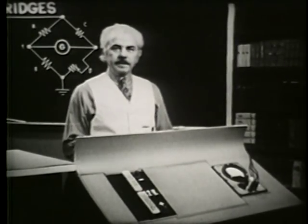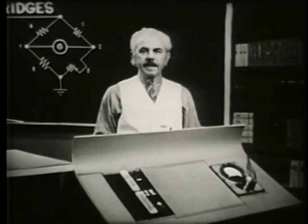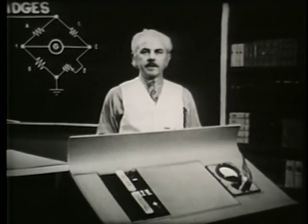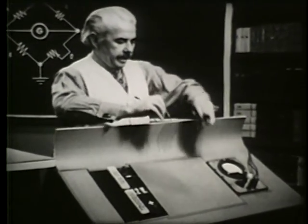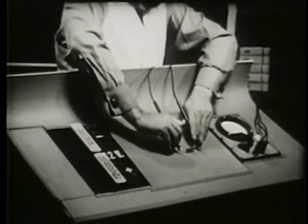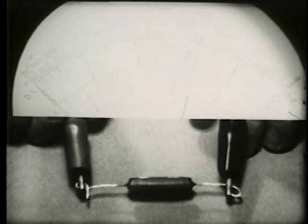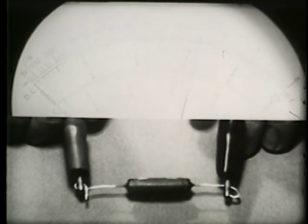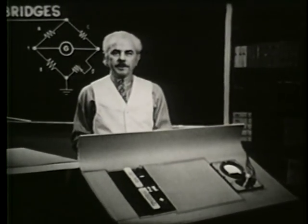In most circuits the components have a wide tolerance, so there's no need to measure exact values of current, voltage, and resistance. For instance, when we are measuring this 15,000 ohm resistor, we'll be satisfied with any reading between 12,000 and 18,000 ohms. This one measures 14,000, and that is very good.